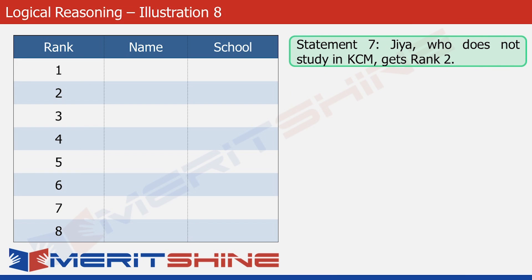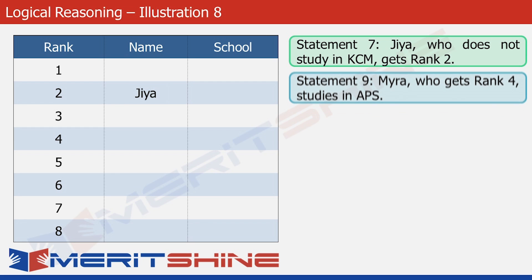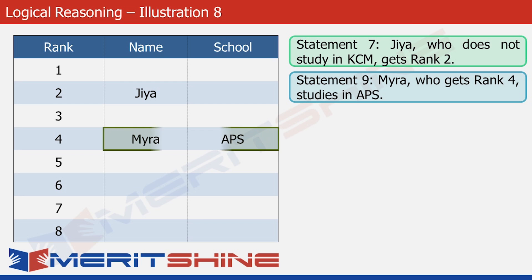The first statement we use is statement 7. It tells us that Jiya got rank 2, so let's put Jiya's name against rank 2. The next statement is statement 9 — it tells us that Myra got rank 4 and that she studies in APS. So let's put Myra and APS against rank 4. These two statements gave us very simple, straightforward data which we could put in the table very easily.